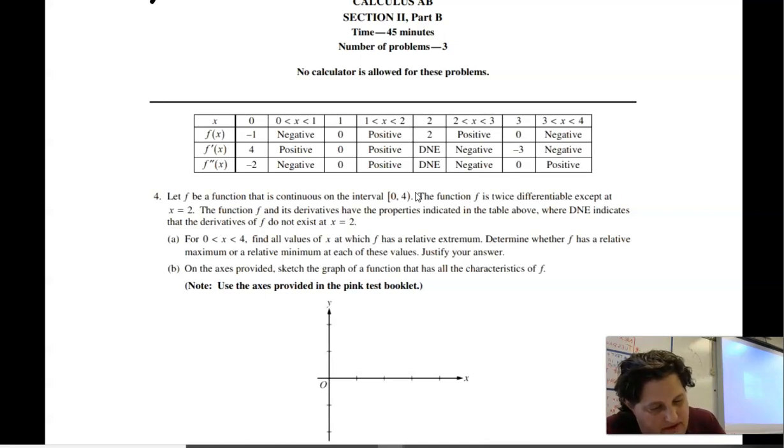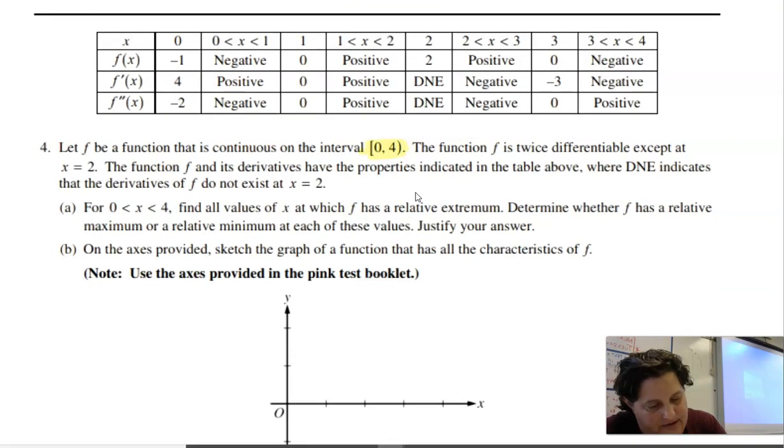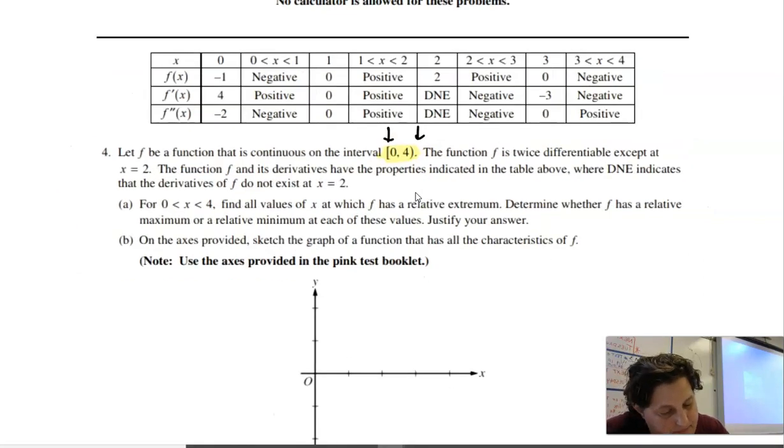Let F be a function that is continuous on the interval zero to four. That's kind of interesting that it's closed and open. The function is twice differentiable except at x equals two. Not differentiable at two, but it has a point. Could it be like a cusp or sharp corner? The function and its derivatives have properties indicated where DNE indicates that the derivatives do not exist at two. For zero to four, find each value which has a relative extremum. Determine whether it has a max or min at each of these values. Justify your answer.